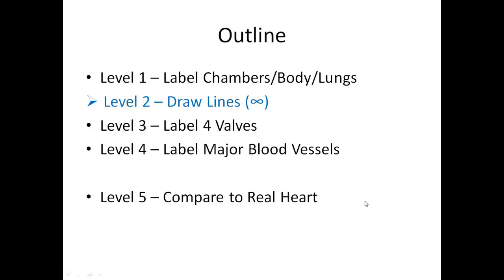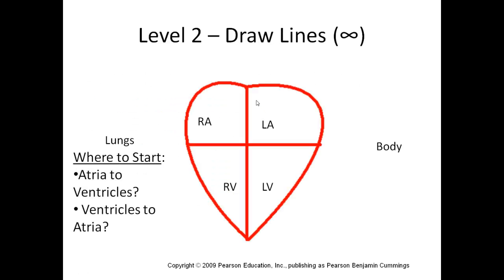Moving on to level two — we draw the lines to connect everything. The pattern you'll see is an infinity sign. To start, we need to decide where to place the first arrow. One way is to start inside the heart: does blood flow from atrium to ventricle, or from ventricle to atrium?